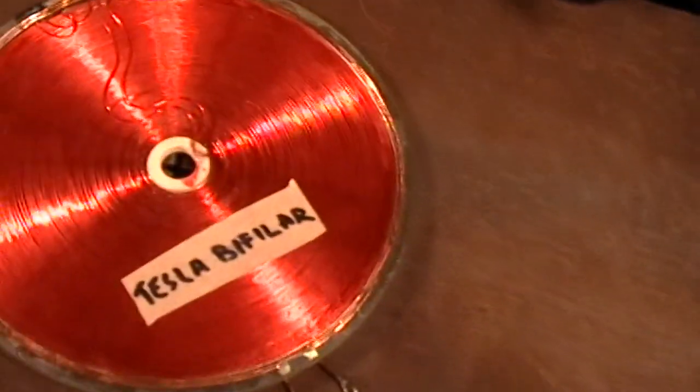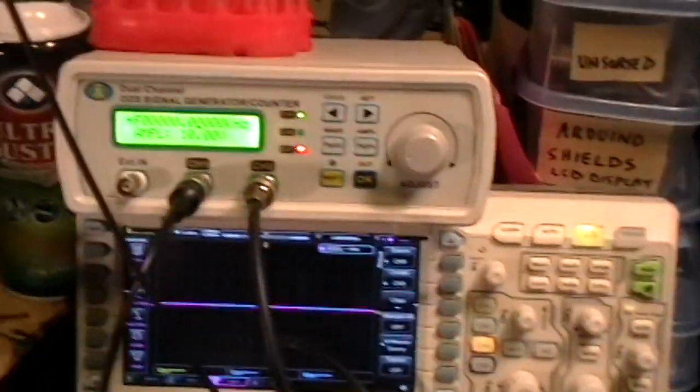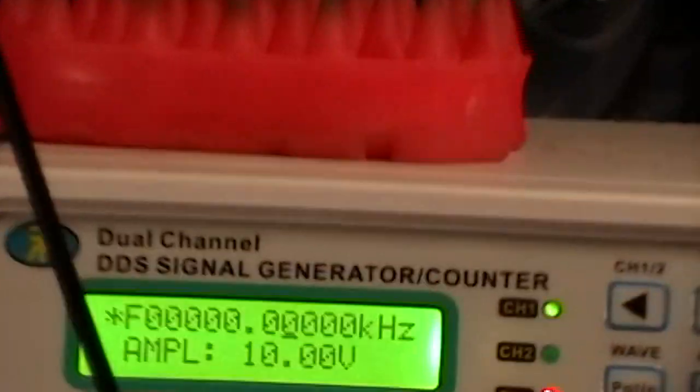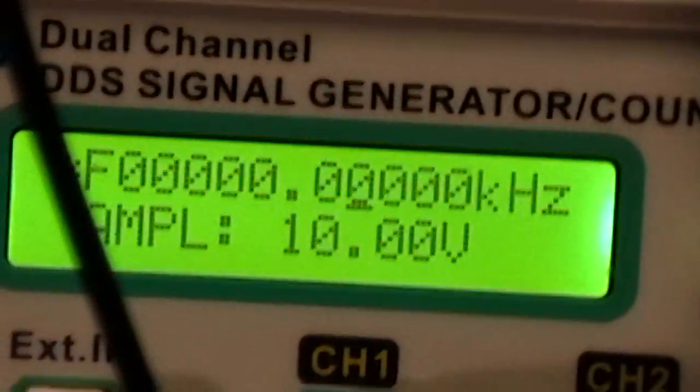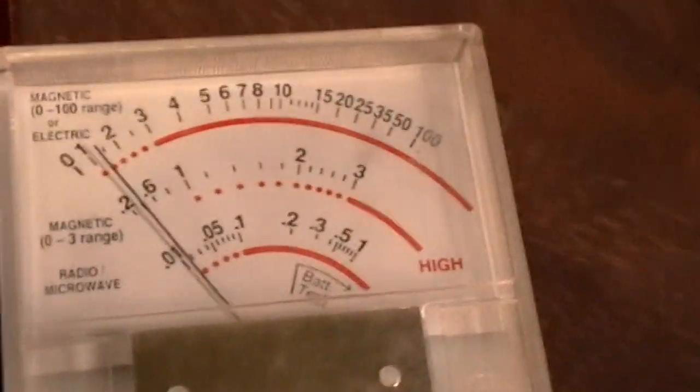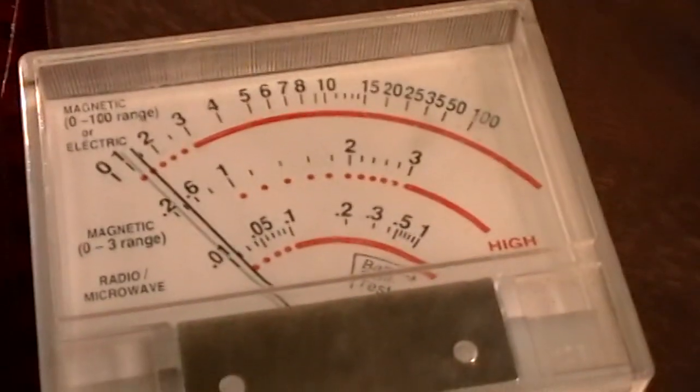Now I've got the Tesla bifilar coil connected up to the function generator. We're back down at zero kilohertz. Nothing going in. I've reset the tri-field meter to the zero to three milligauss range. That's the middle dial there. Now I'm going to start adding frequencies.